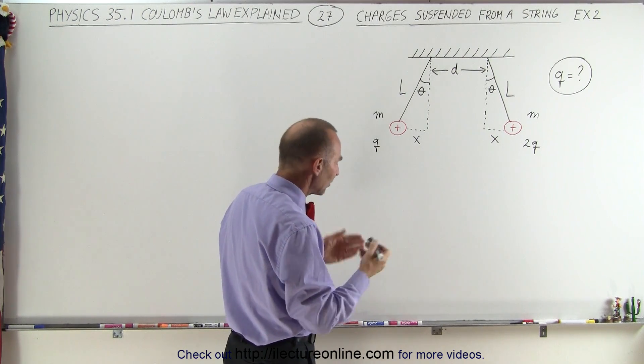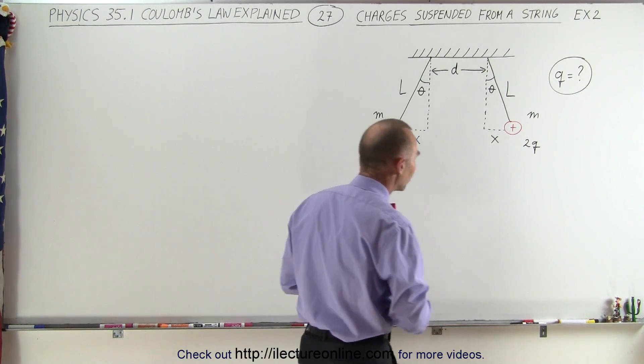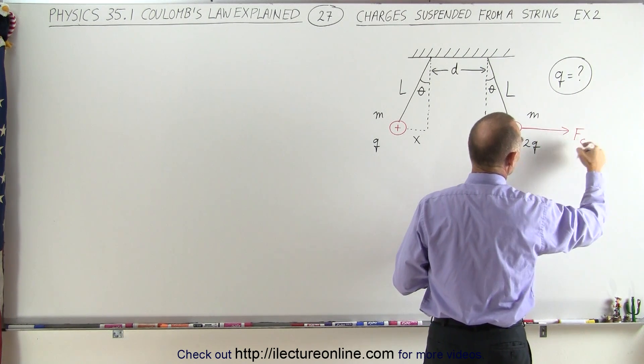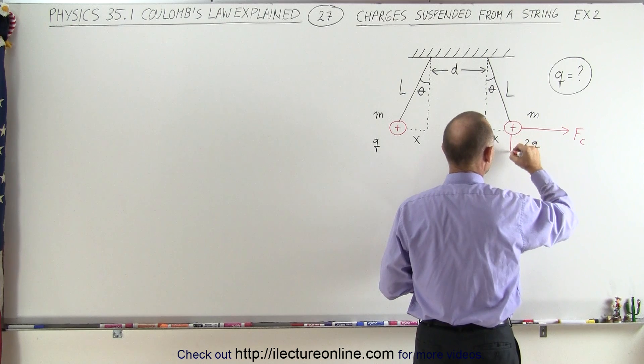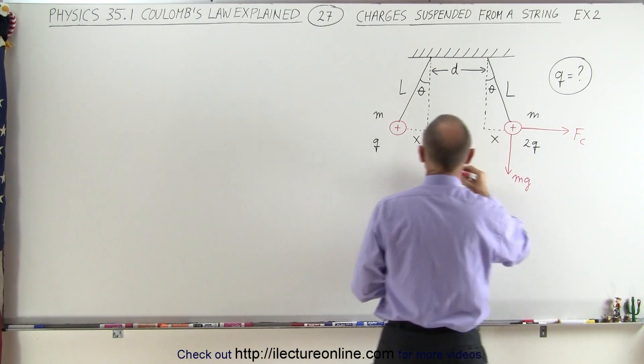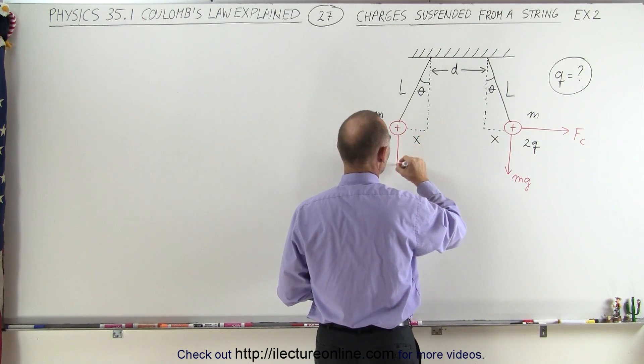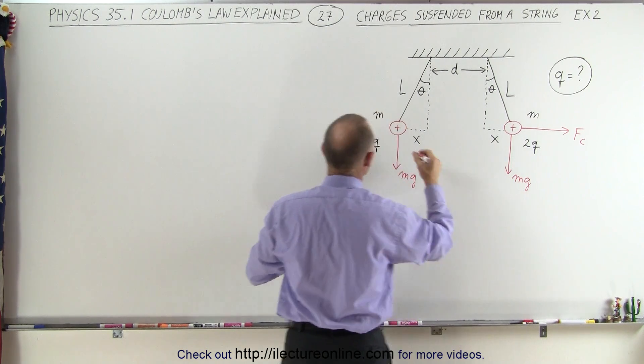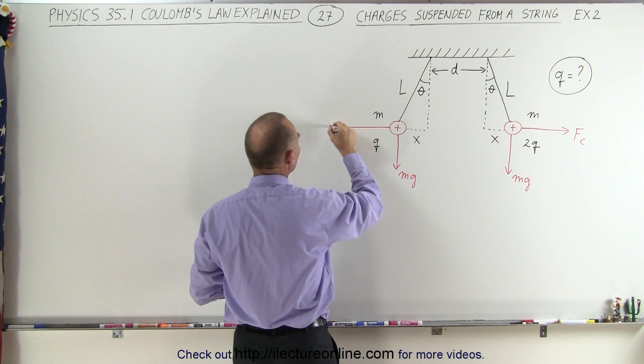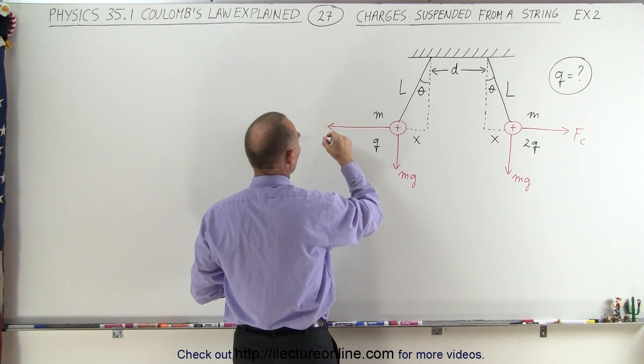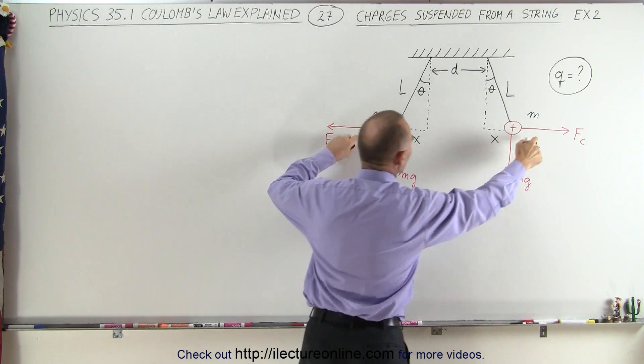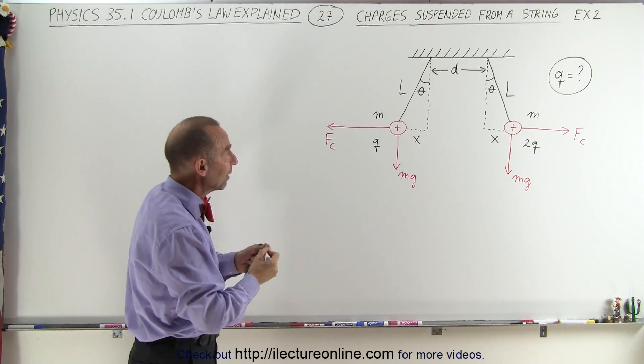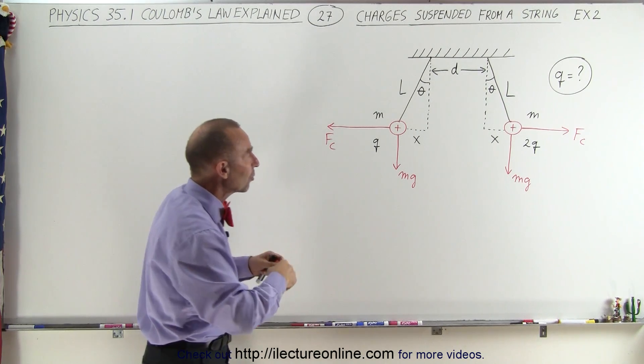So if we're going to find the force, let's first draw the forces here. This one will get pushed to the right with a force F_C, which is the Coulomb force, and will get pulled down because of the force of gravity. Likewise over here, this one will get pulled down with the force of gravity mg, that should be equal to one another because they have the same mass, and this one will feel a force pulling it to the right, F_C, and those two forces should be equal to each other, again because Newton's third law, for every action there must be an equal and opposite reaction.